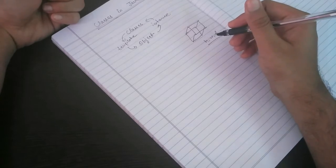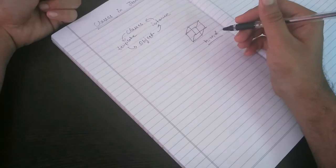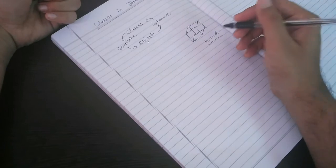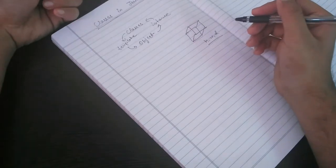In the real world, when software is created or a program is created, there are many functionalities where you have to create your own data type to store different types of information and perform different types of calculations among those data type members.